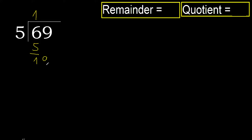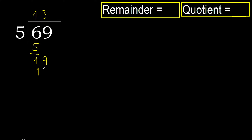Next: 19. 5 multiplied by 4 is 20, 20 is greater. Multiplied by 3 is 15. Subtract: 4.